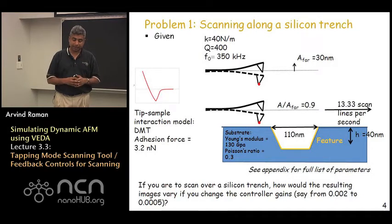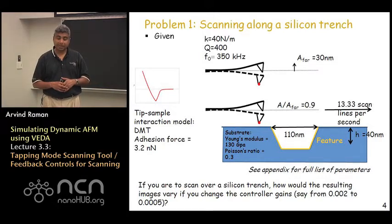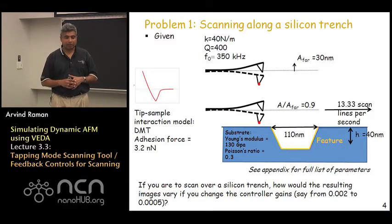You are asked to scan at a set point ratio of 0.9 at 13.3 scan lines per second. So it is pretty fast, about 13 hertz a line.